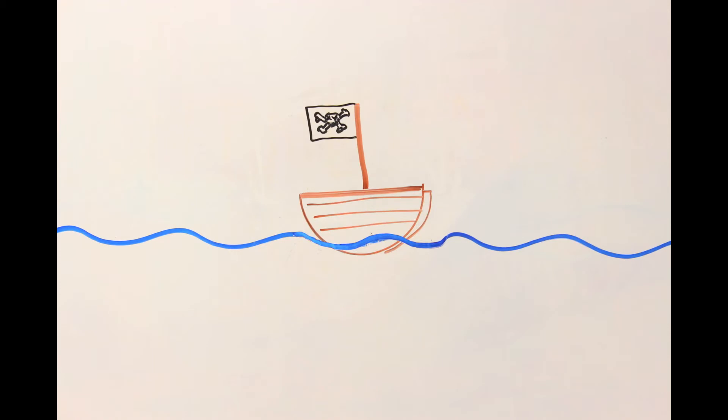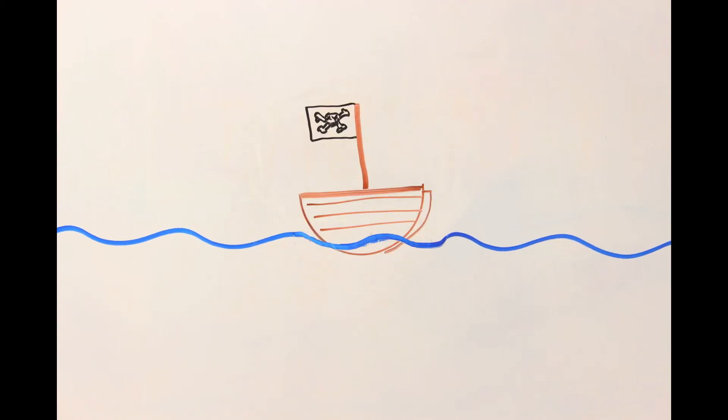When the weight is removed, the boat will bob up like a cork, higher than its previous position, before slowly settling back into equilibrium.